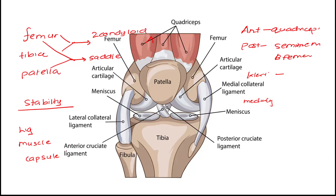Clinically in orthopedics, if there is some sort of a tear or ligament damage and the quadriceps of the individual are not completely developed, it will not have good prognosis on the healing of the joint. Therefore the quadriceps are paramount when it comes to stability of the injured knee joint.